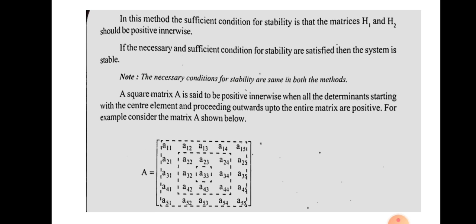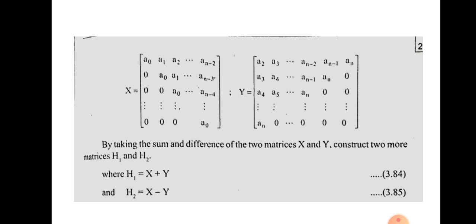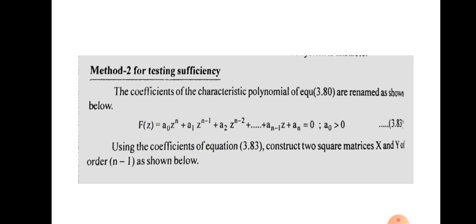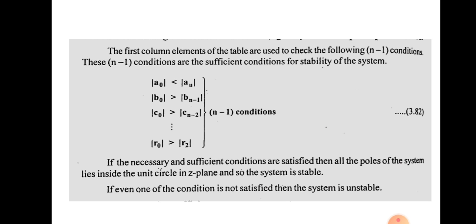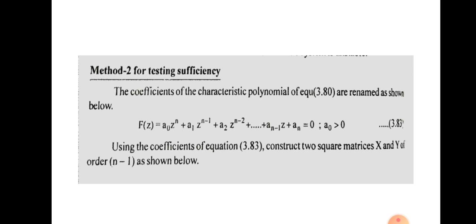If both the necessary and sufficient conditions for stability are satisfied, we can say the sample data system is stable. These are the two methods for testing sufficient conditions in Jury's test. For solving problems, it is better to use Method 1. In the next video, we will do a problem on this topic.